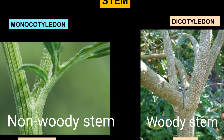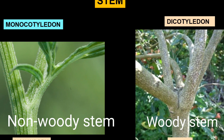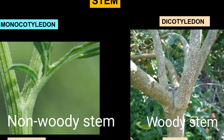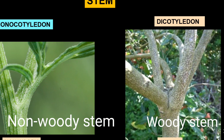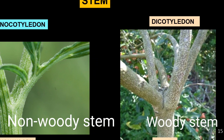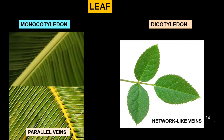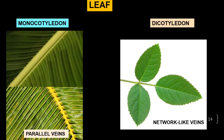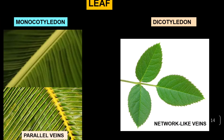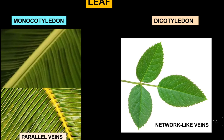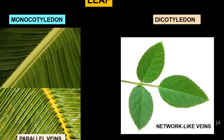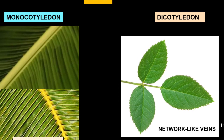Monocots have a non-woody stem, meanwhile dicotyledons have a woody stem. For the leaf, monocotyledons have parallel veins, meanwhile dicotyledons have network-like veins.